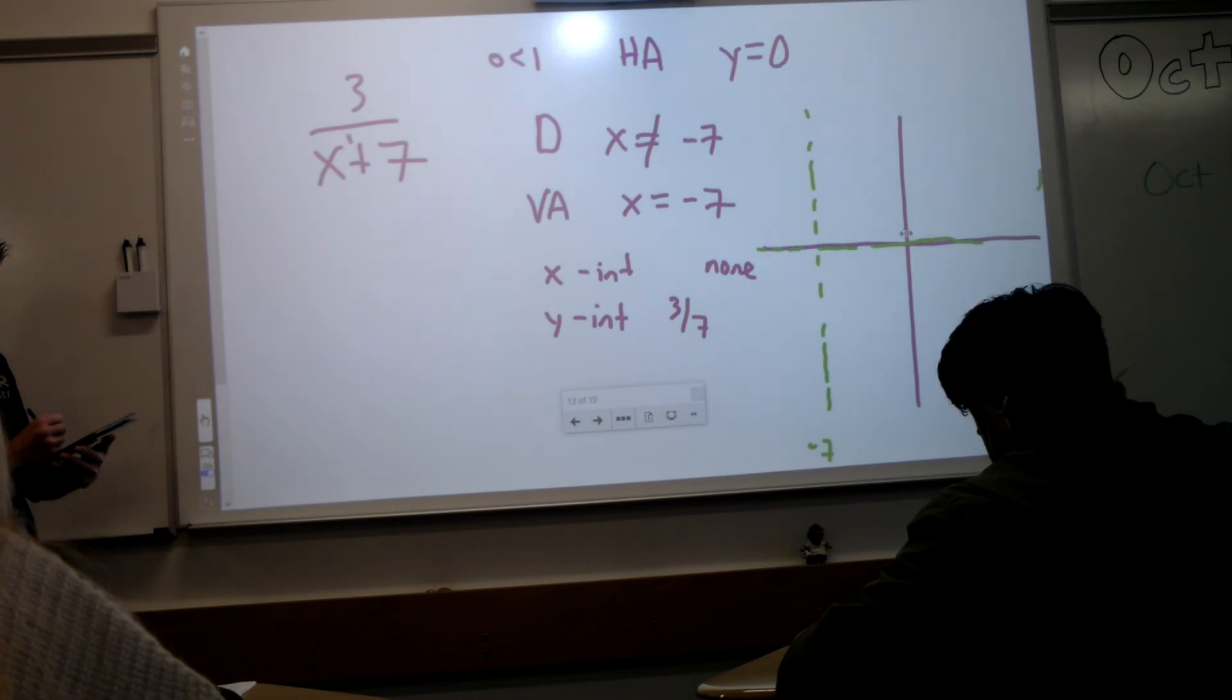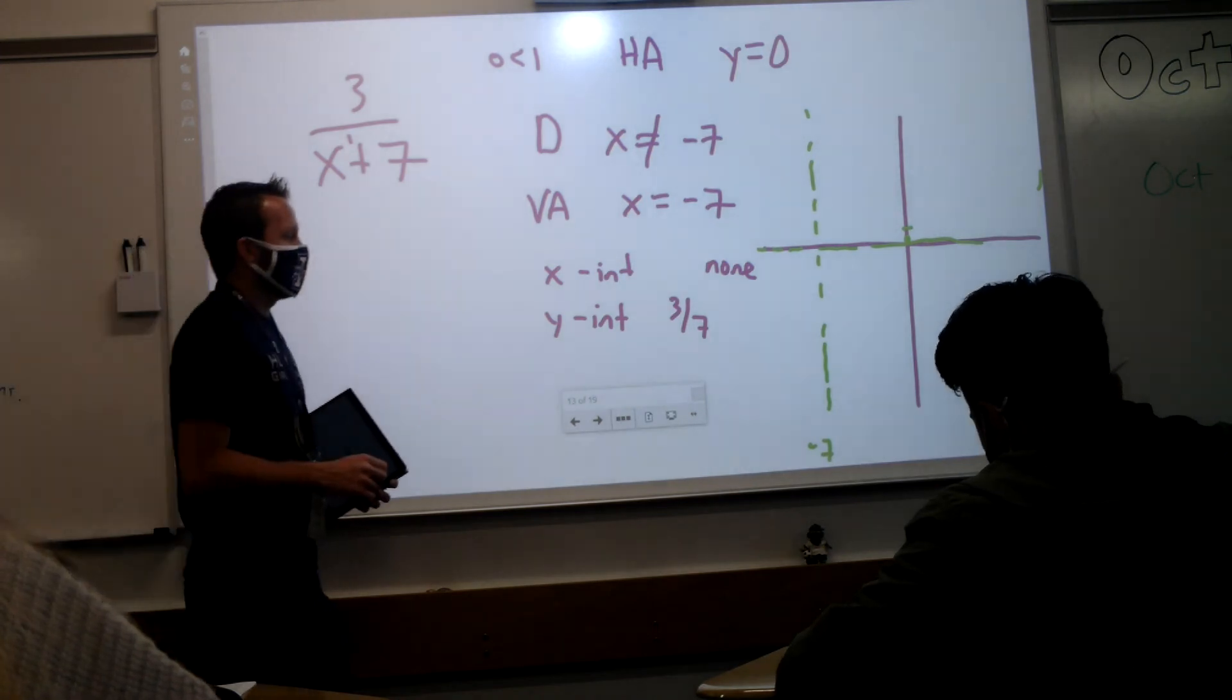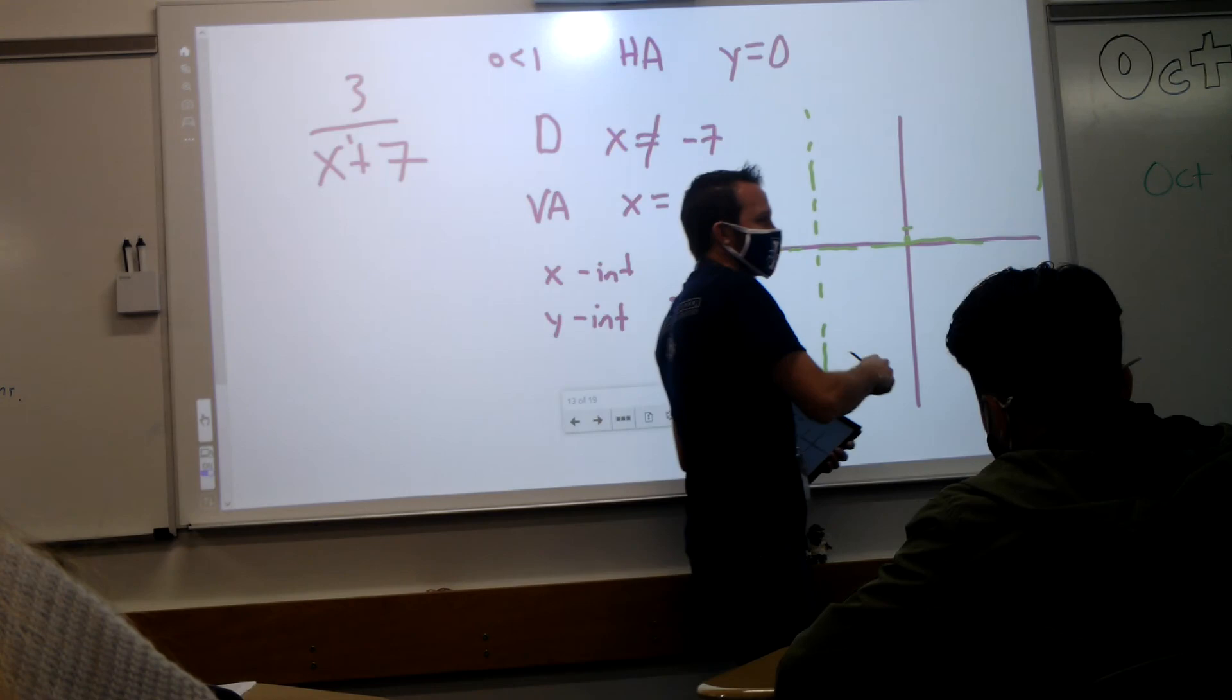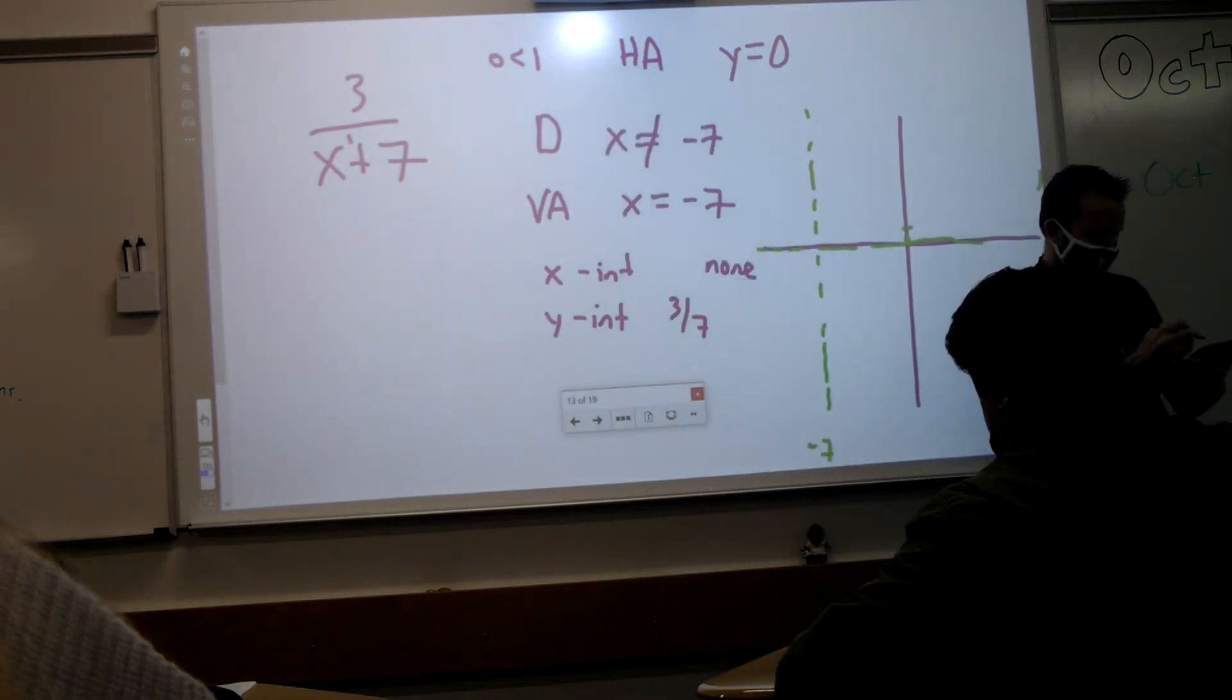And a horizontal asymptote at zero. We're going to have a y-intercept of three-sevenths. So if that's one, it's going to be something like that. And that's basically it. How do I figure out if it's positive or negative by plugging a point? Well guys, we already plugged in a point at zero, and we got a positive. So that tells me on the right, it's going to look like that.